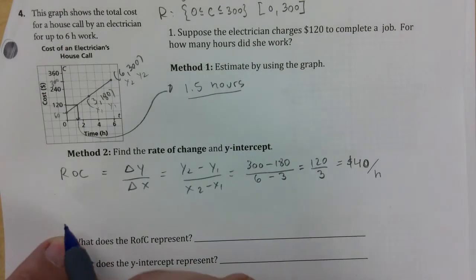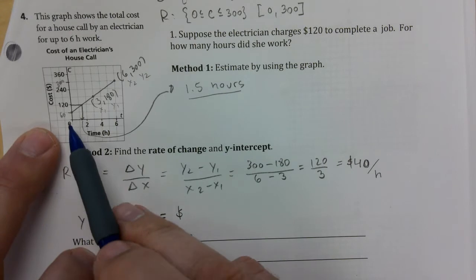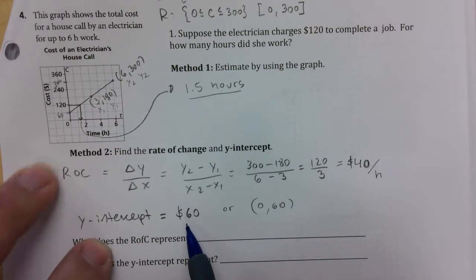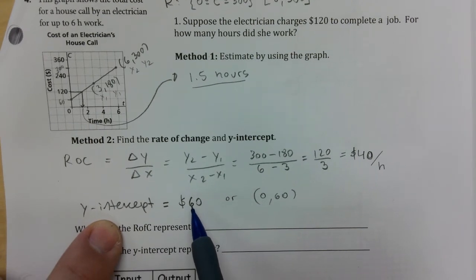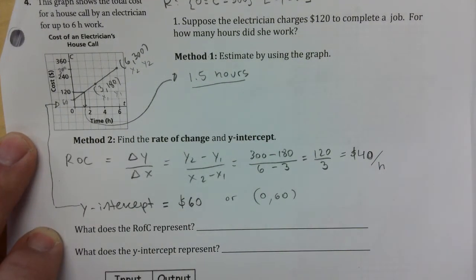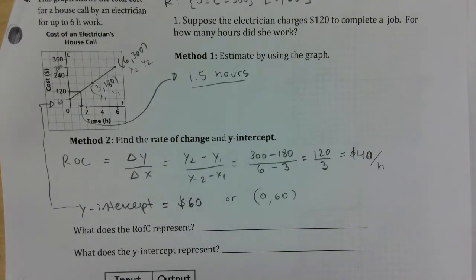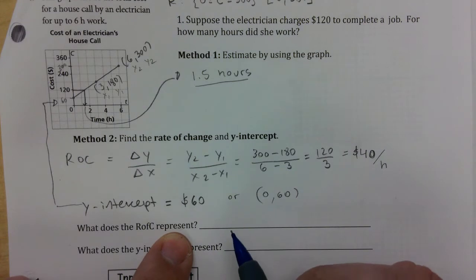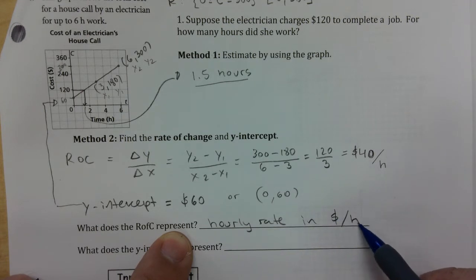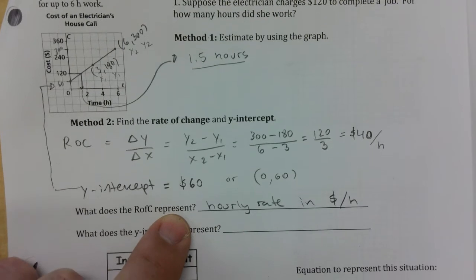The y-intercept is $60. You won't get it wrong by adding units when there's a context. There is no x-intercept in this case. The rate of change represents the hourly rate — in dollars per hour — or how much the person earns for every hour worked.